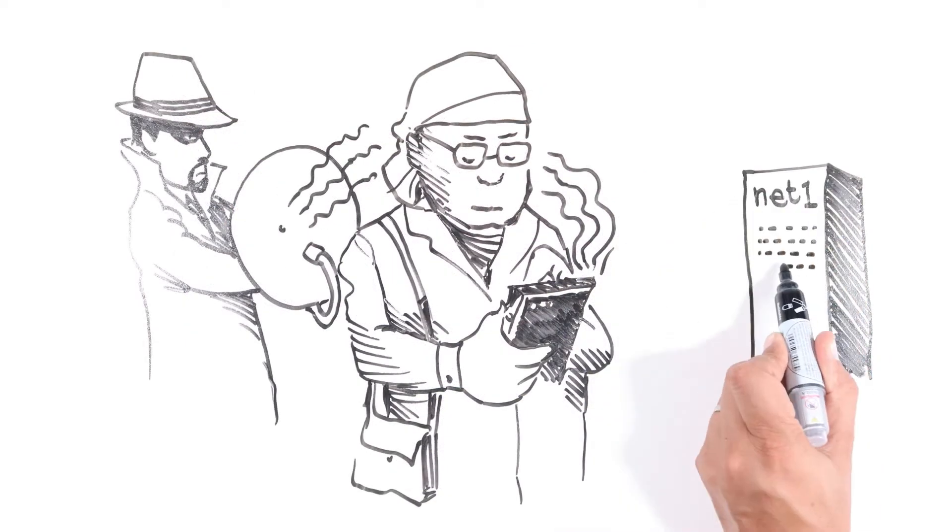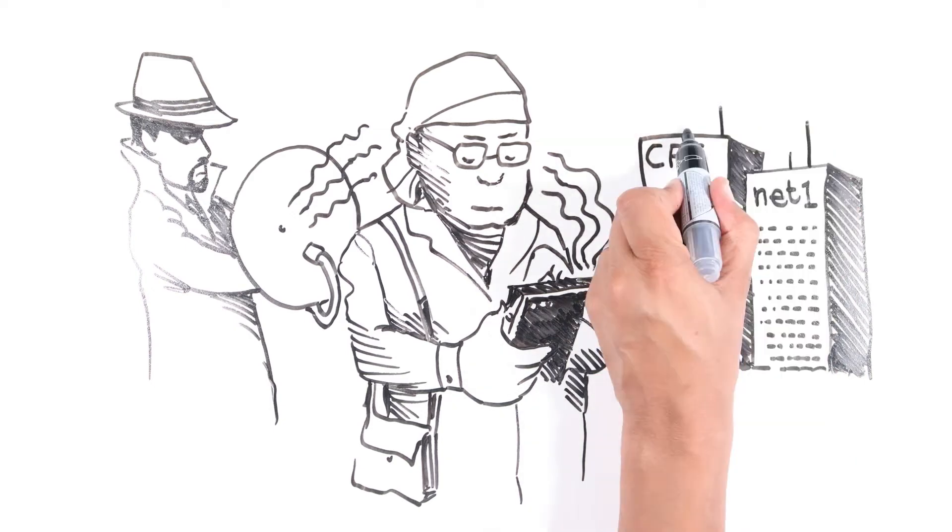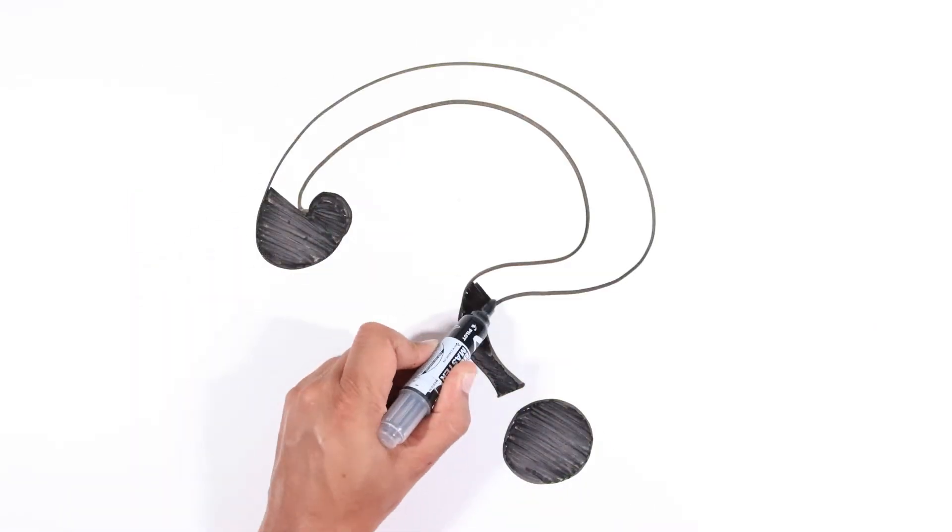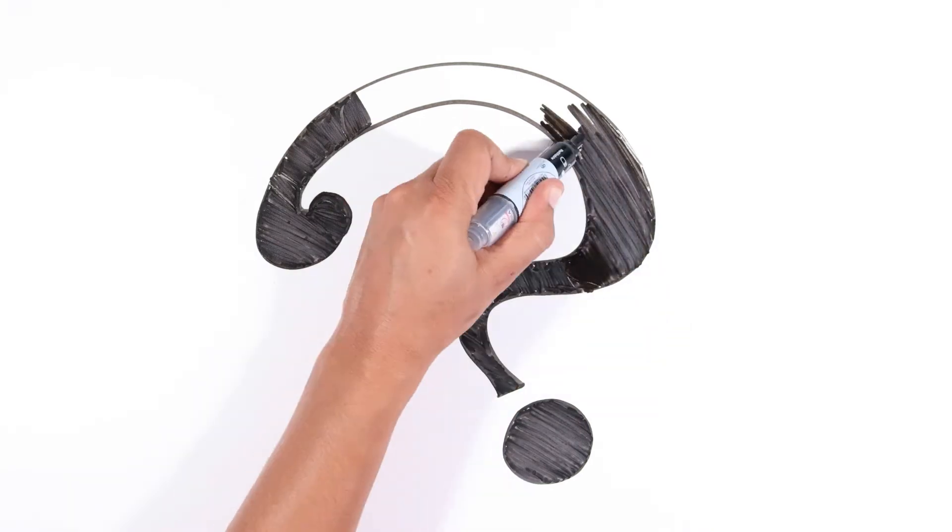We have seen the dangers of these systems in the past in South Africa, where companies like NetOne and CPS abuse their control of the grant system. Other countries that have digitalized social welfare have faced the same consequences. So, it's all bad and we're doomed?